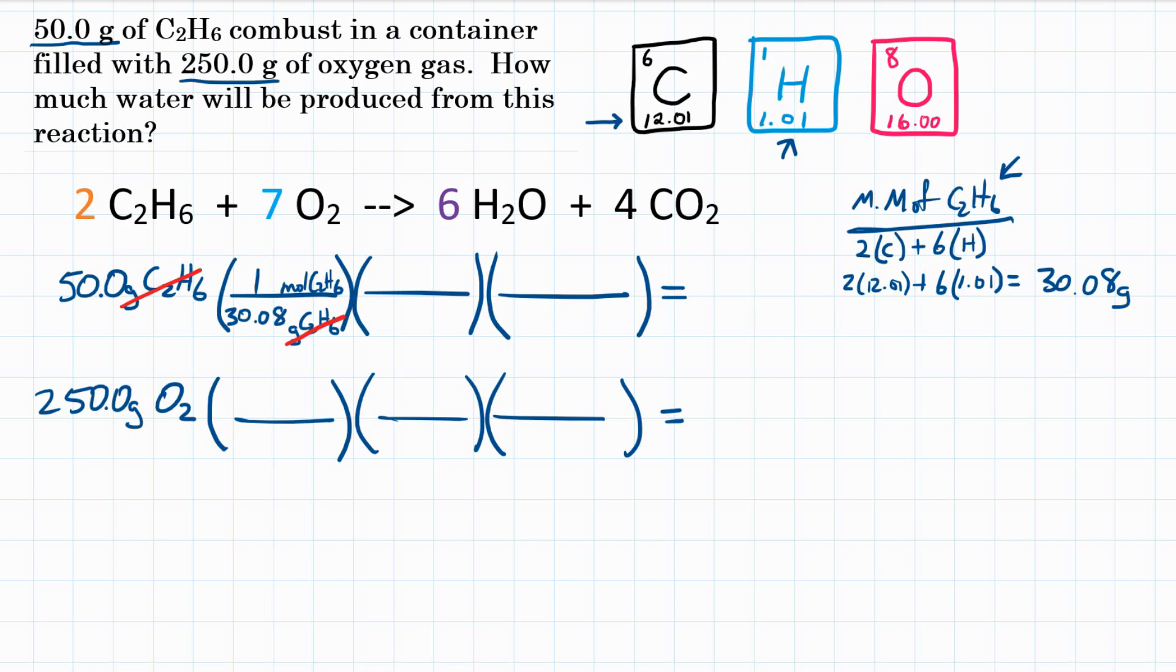So now we have to convert our moles of C2H6 into moles of what we're trying to calculate, moles of water or H2O. For this second step, we use the mole ratios. That is the coefficients in front of the compounds in our chemical equation. So for C2H6, it is two.